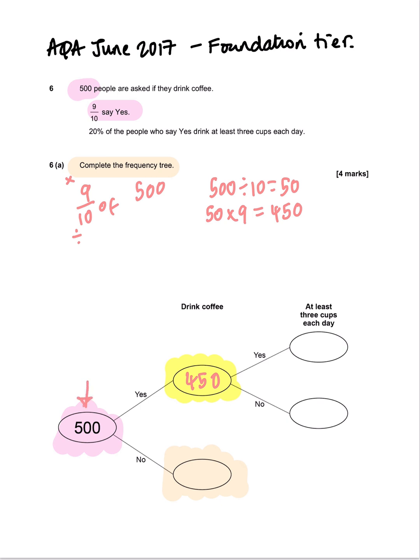The total is 500, 450 drink coffee, so the difference between 450 and 500 are the people that don't drink coffee. So 500 take away 450 is 50. I'm going to put 50 in the no drink coffee section of the frequency tree.